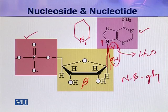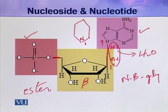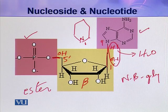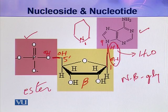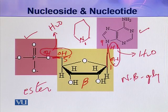Now let us look at how the phosphate group is attached to the pentose sugar. This linkage is called an ester linkage. An ester is formed when a phosphoric acid or any other organic acid is attached to a hydroxyl or alcohol group. This is the 5' carbon of the pentose, and at this 5' carbon a hydroxyl group is present. The hydroxyl group of the pentose and the hydroxyl group of phosphoric acid combine, eliminating a water molecule, establishing a bond called an ester bond. In this way all three components are joined to make a nucleotide.